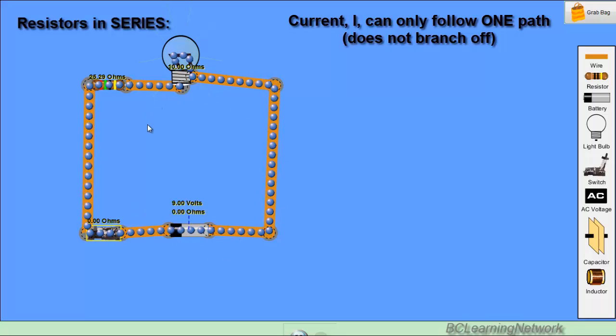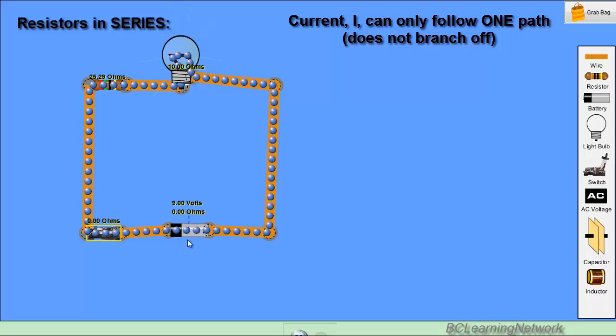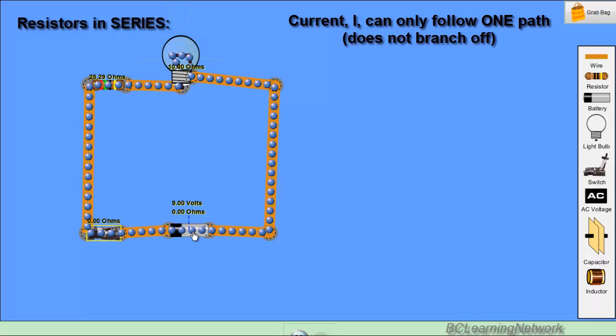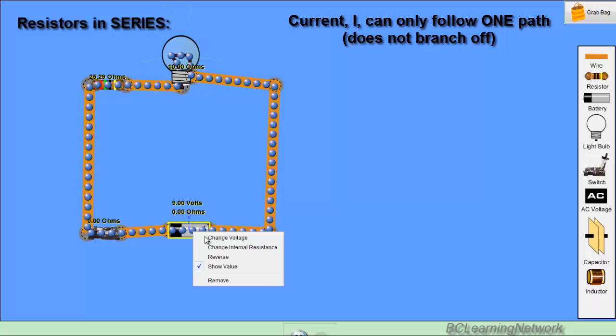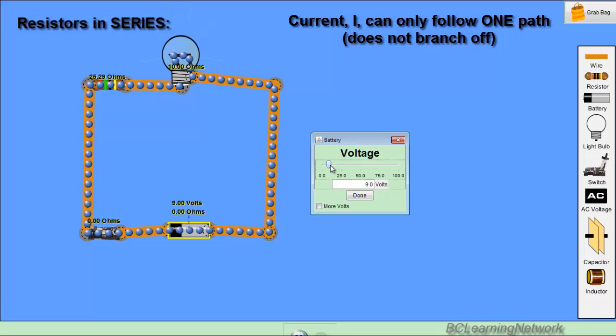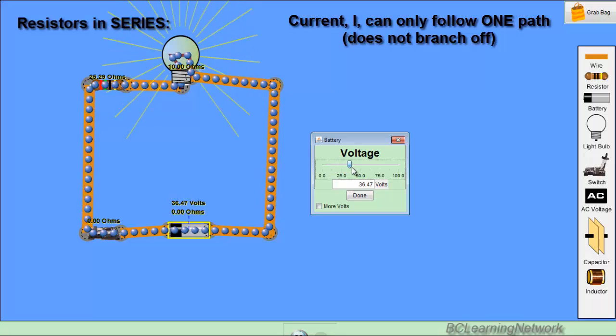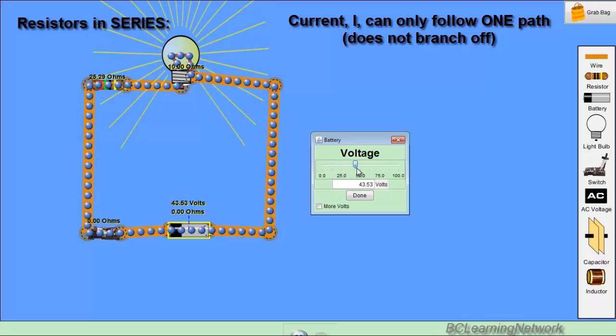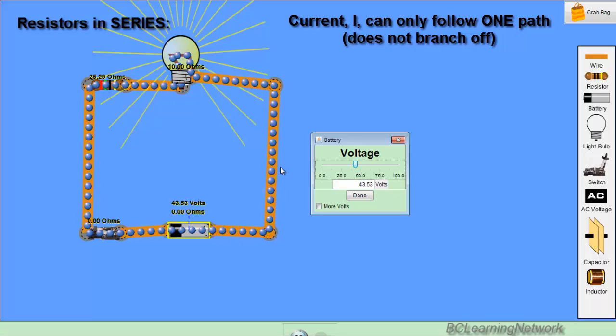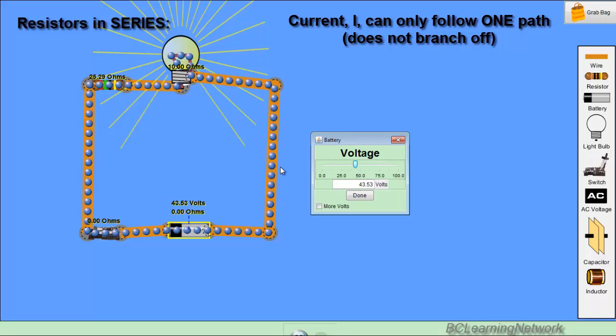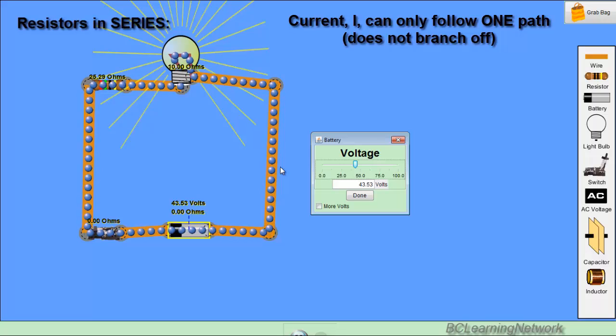Now if I want to increase the flow, increase the current, one thing I can do according to Ohm's law is crank up the voltage that the battery has got. So if I right click on my battery and I crank it up, watch what happens. See, first of all you can see the light bulb gets brighter as more current flows, and you can actually see the electrons moving more quickly. So as the voltage increases, the flow increases as expected.